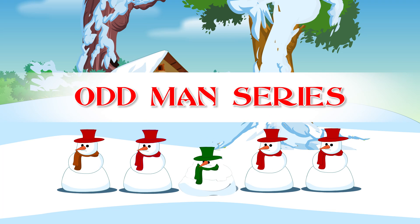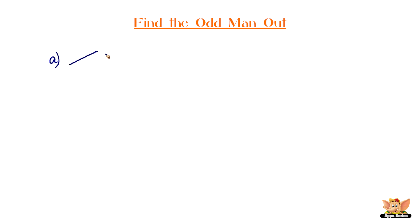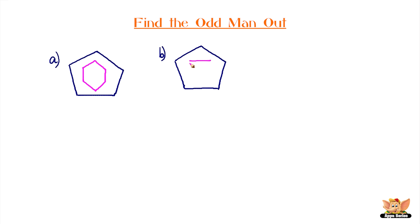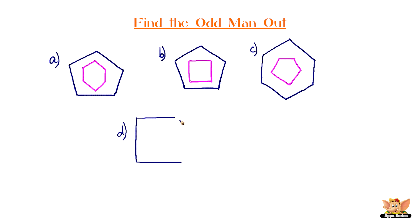Odd man series — let's do some odd man series puzzles. Here's your question: there are some shapes and each of them have another polygon inside them, but one of these does not match with the given set. Identify the odd one out. This doesn't look too hard, now does it?